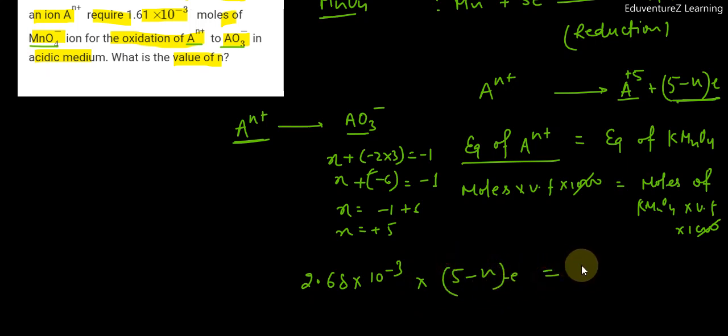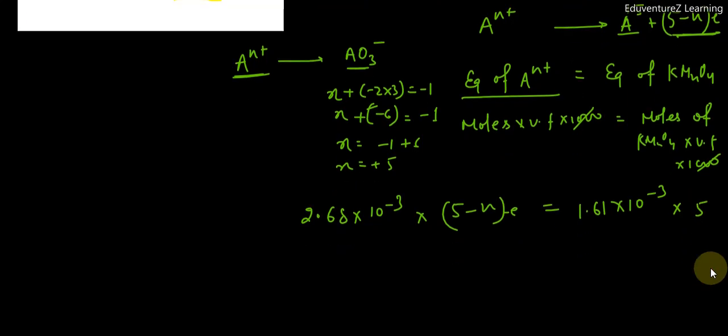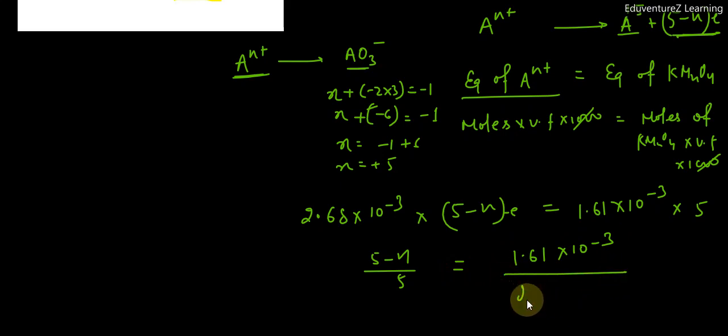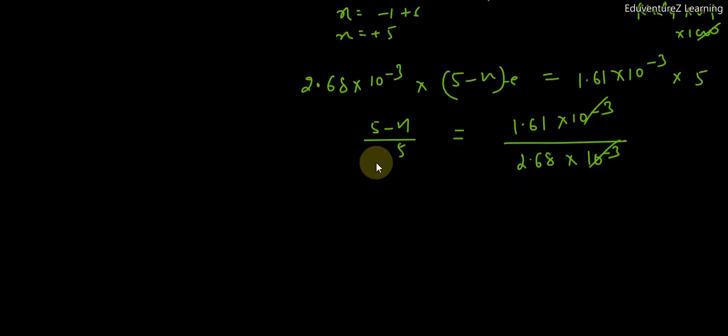And if KMNO4 moles is 1.61 into 10 to the power minus 3, valency factor here is 5. So 5 minus N by 5 equals to 1.61 into 10 to the power minus 3 by 2.68 into 10 to the power minus 3. Minus 3 minus 3 cancels. Now 5 minus N equals to 1.61 into 5 by 2.68.